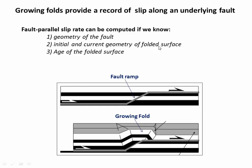Here's how this works. First, we have to understand how these folds form. Imagine a bunch of horizontal sedimentary rocks being moved laterally and forced up and over an underlying fault ramp. As the sediments go over, they get buckled upwards into a fold shape, and this is occurring over time. So if we know three things, we can estimate the slip rate. First, we need to know the geometry of the underlying thrust ramp. Second, we need to know what the geometry of the sedimentary layers was initially, and what the geometry is now.